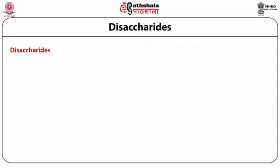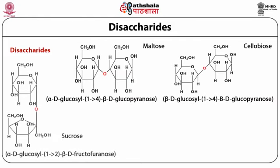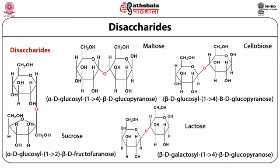Examples of disaccharides include maltose, cellobiose, sucrose, and lactose. Maltose is two glucose units linked via alpha-1,4 linkage. Cellobiose is two glucose units linked via beta-1,4 linkage. Sucrose is glucose and fructose linked via alpha-beta linkage. Lactose is galactose and glucose linked via beta-1,4 linkage. Whether the linkage is alpha or beta depends on whether the anomeric carbon is axial (alpha) or equatorial (beta).